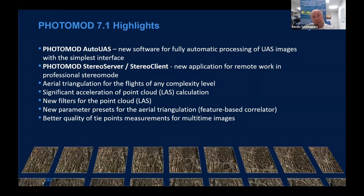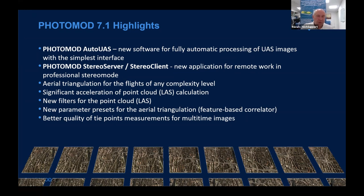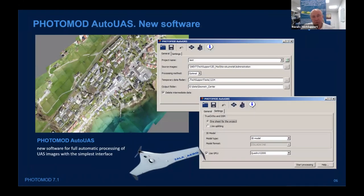Let's go to 7.1. The main new features: first is Auto UAS — new software for automatic processing of UAV images, which we'll talk about later. Second is Stereo Server/Stereo Client — an application for remote work in professional stereo mode. There are also some features that make the software faster and more accurate, related to point cloud calculation, aerial triangulation, and so on.